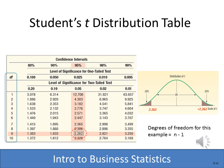Looking up the t-value is a bit more involved than z. First, find the 95% confidence interval column. Then find the degrees of freedom, which is n minus 1. With a sample of 10 tires, degrees of freedom = 9. At the intersection of the df = 9 row and the 95% confidence interval column, we get a t-value of 2.262, which we'll use in our formula to compute the margin of error.